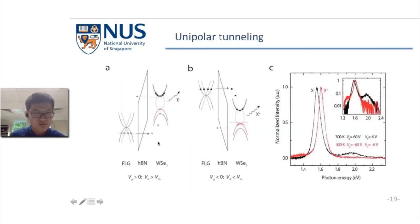This is the mechanism we propose for the light emission and trion formation process. For example, in the positive gate condition, WSE2 is heavily n-doped, and the few-layer graphene is p-doped by the bias. After threshold, the holes from few-layer graphene tunnel through the boron nitride and find the excitons in the WSE2 and form negative trions. This is similar for the positive trion formation process.